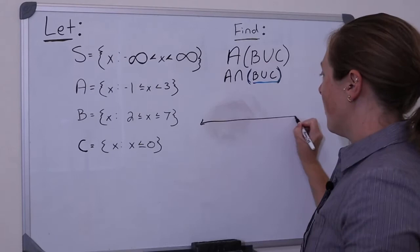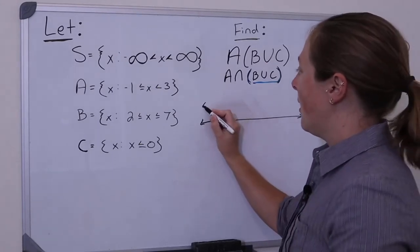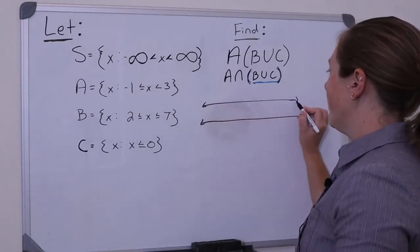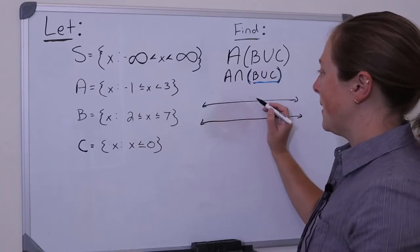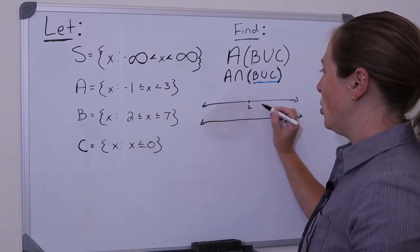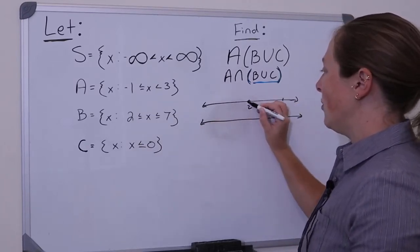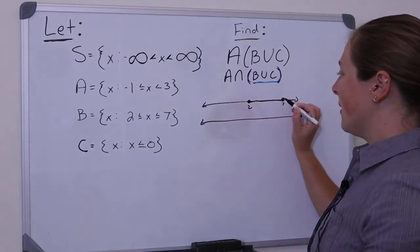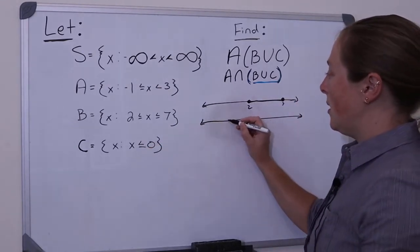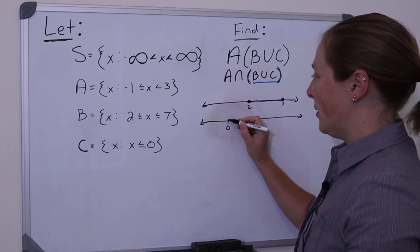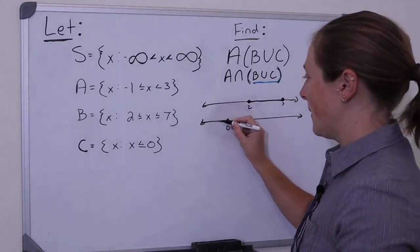So let's draw the number line for both B and C. So B goes from 2 to 7, including 2 and 7. And C is less than 0. So here's 0, down here.